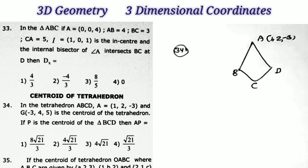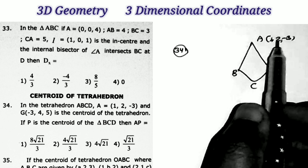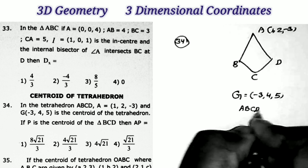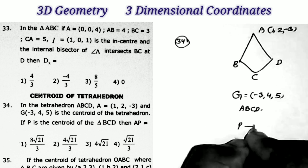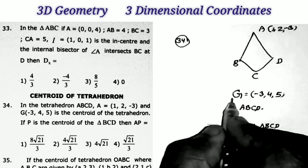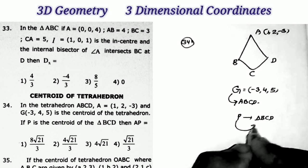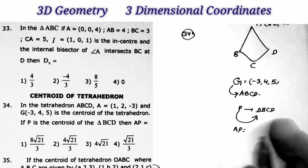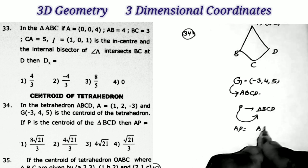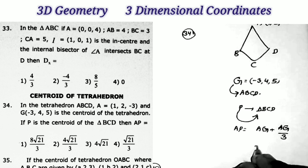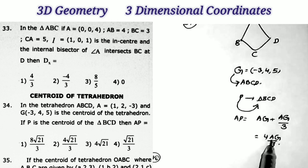Next question, sum number 34. In tetrahedron ABCD, A = (1, 2, -3), G = (-3, 4, 5) is the centroid of the tetrahedron, and P is the centroid of triangle BCD. What is AP? Here we use the formula: AP = AG + AG/3 = 4·AG/3.